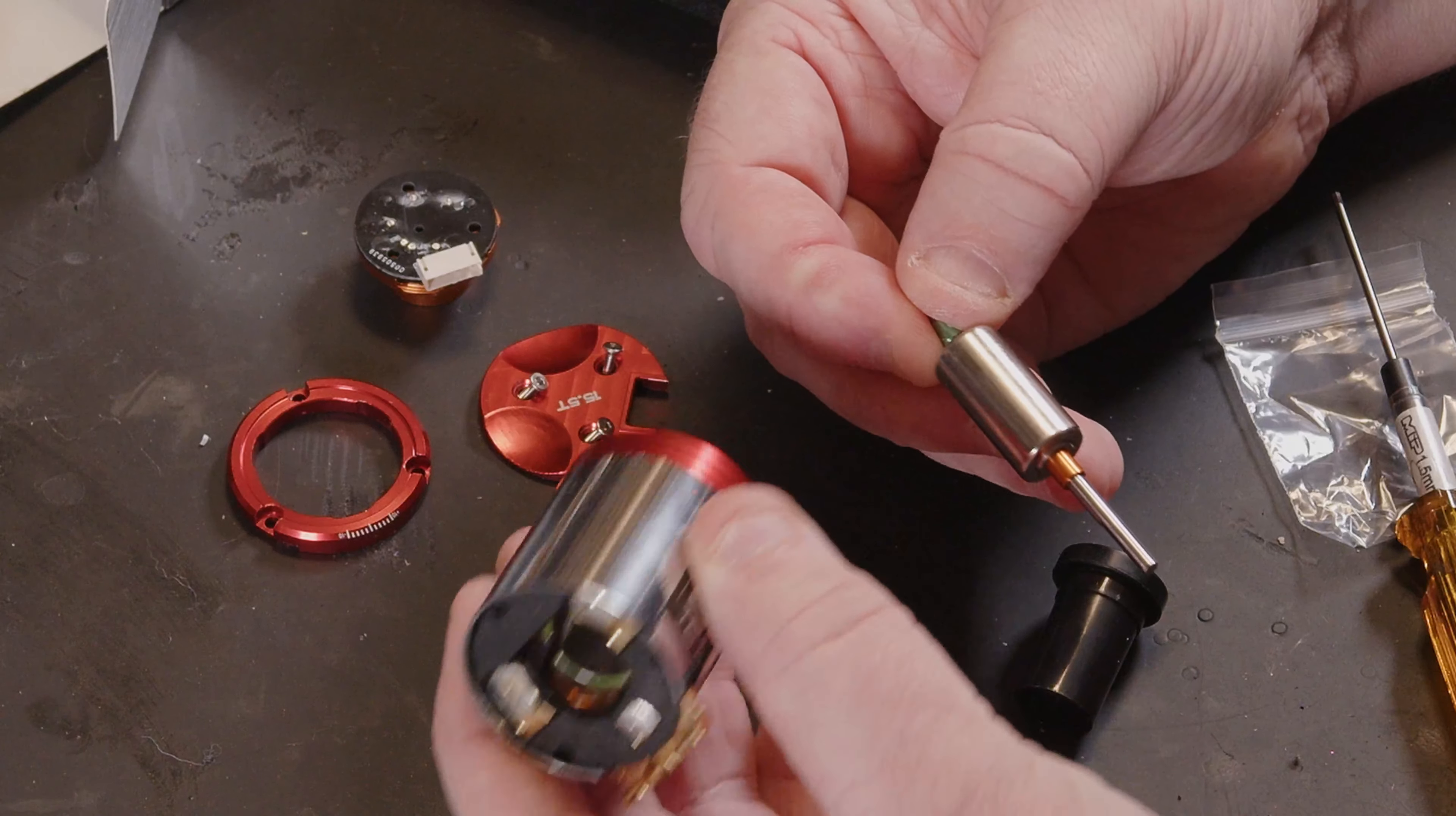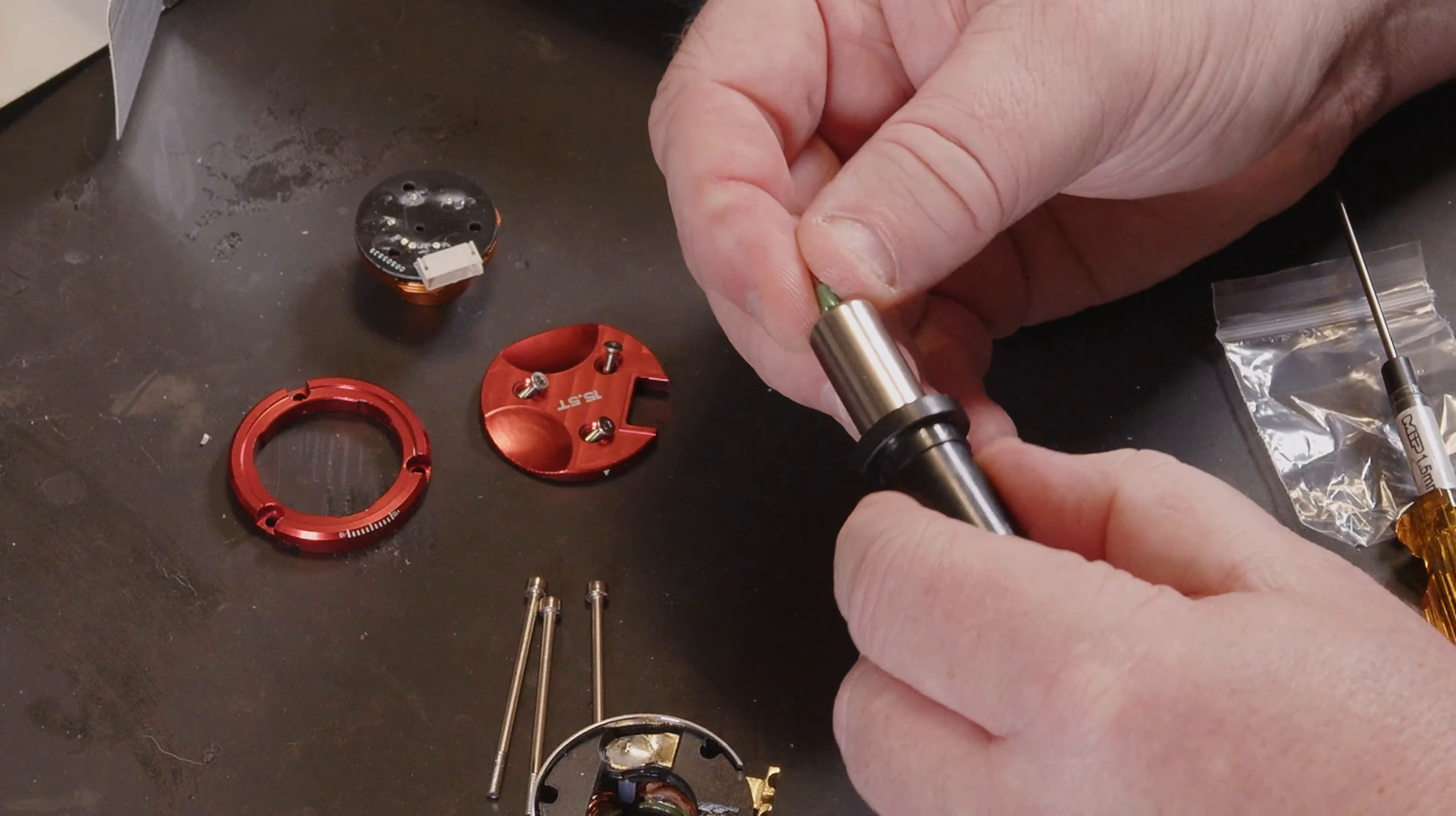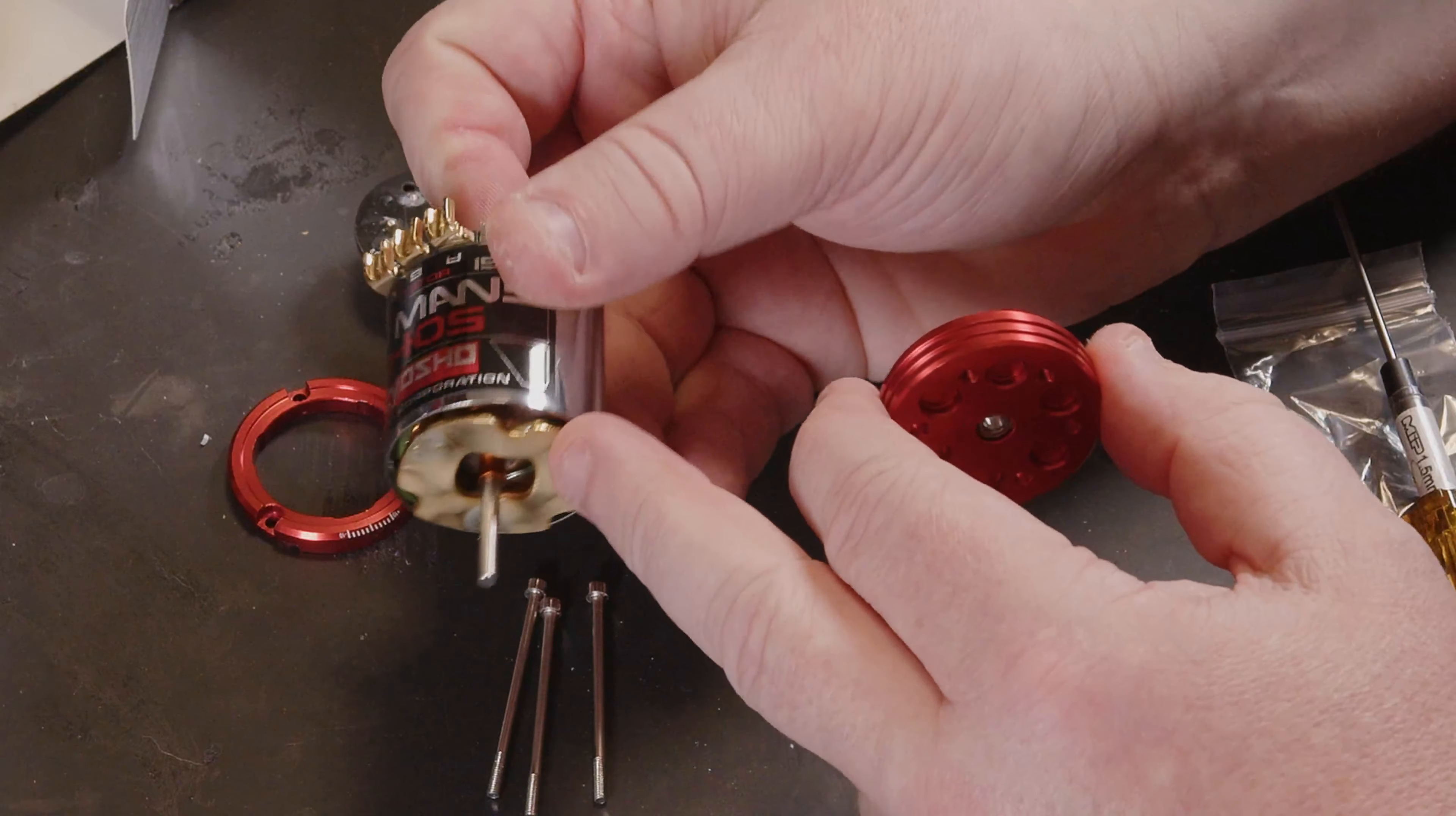But yeah, if you needed to service that bearing in the bottom, not sure if you can see it right down in there, quite easy to actually get to it to service. This is going to be easier said than done because it's going to want to pull out of your fingers, but we should be able to use that sleeve to position the rotor back in the center. Then you can see the actual end of the windings.